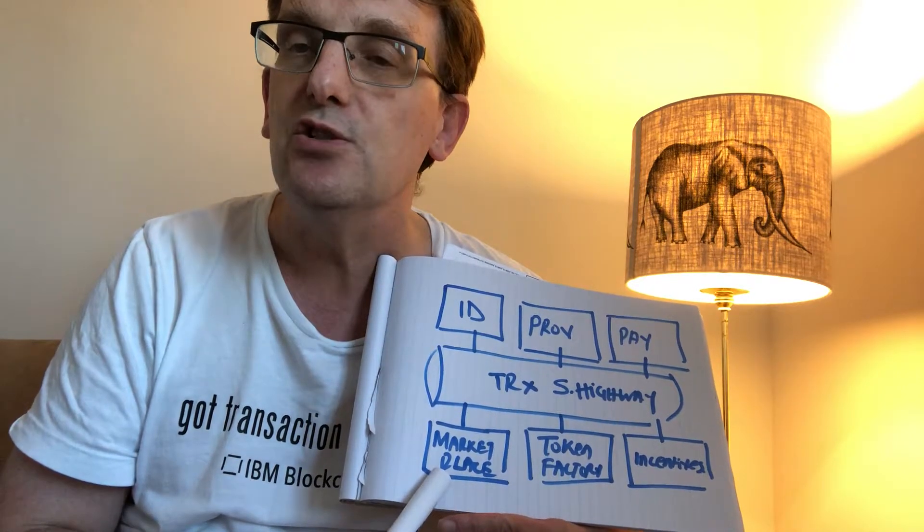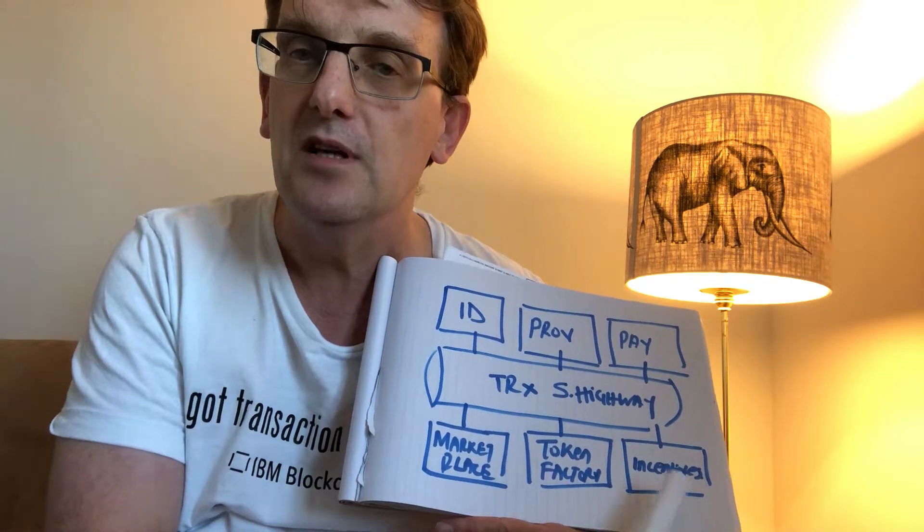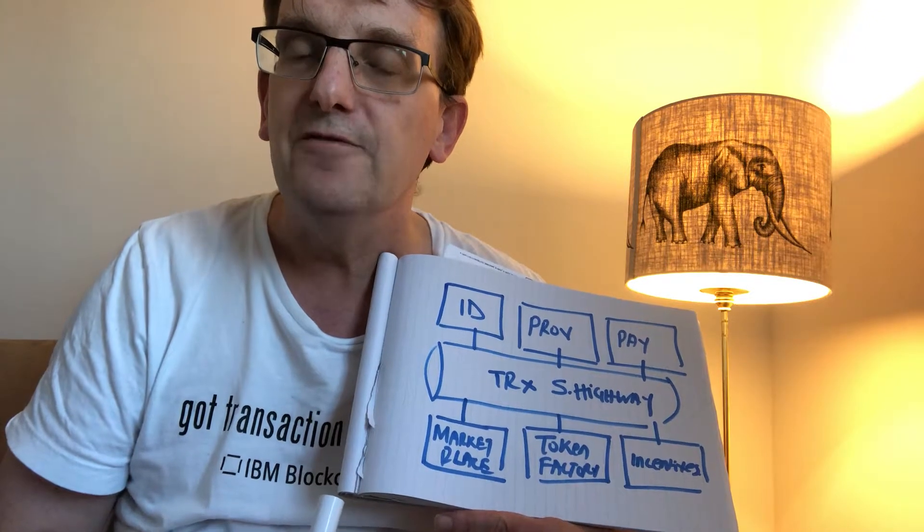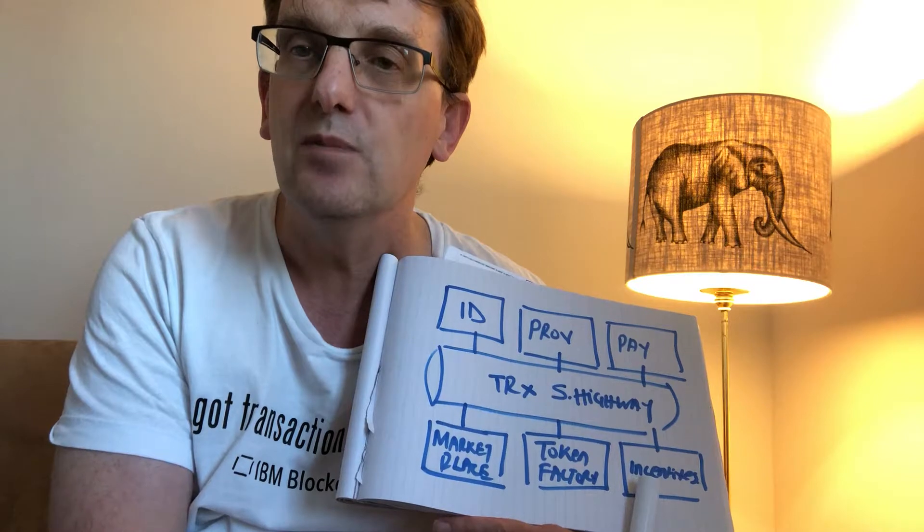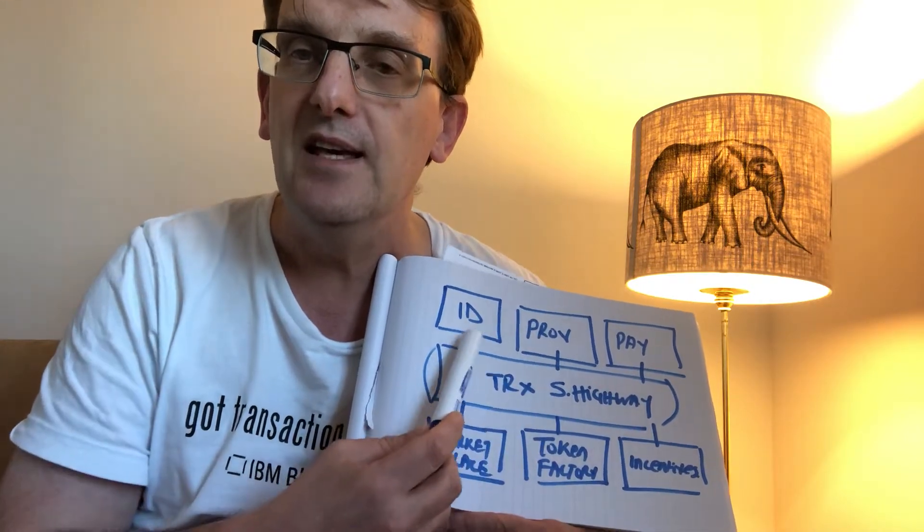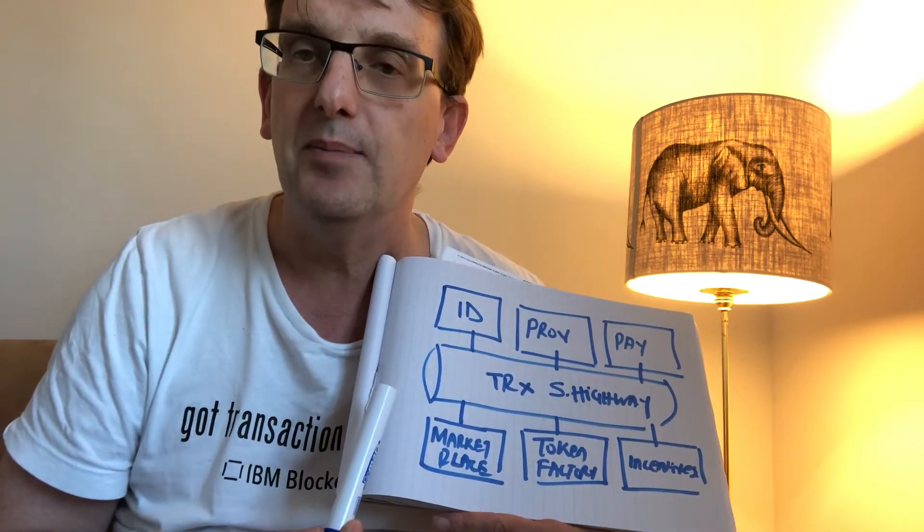The final component to make this transaction superhighway function will be the development of new forms of incentive model to encourage helpful behavior in each of these components to drive the maximum transactions through the pipe.